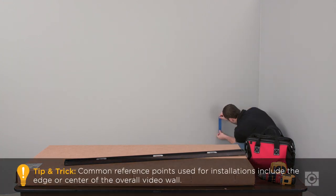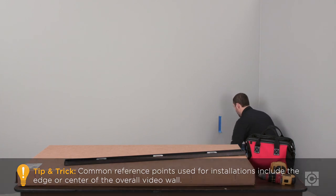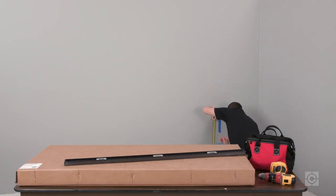For on-wall installations, the reference point will be room dependent, but most likely the edge of your tiled wall will be some point measured from the floor or corner of the room.